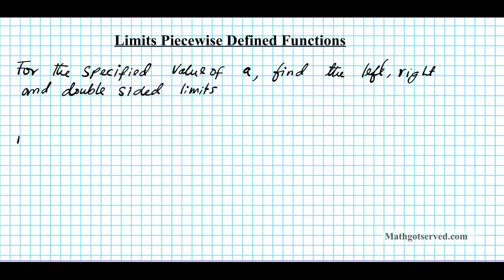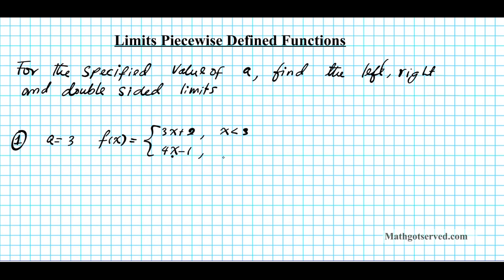Question one: what if we have A equals three and the piecewise defined function f of x equals three x plus two for x less than three, and four x minus one for x greater than three? To help you get an orientation of these two functions, I'm going to put them on a number line — we can just use a number line to understand what's going on.